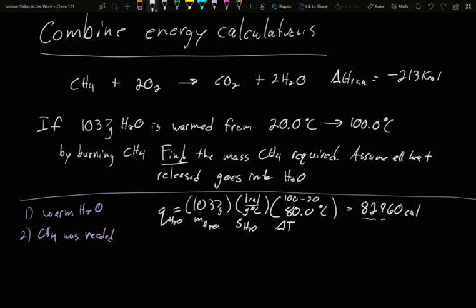Well, all that energy came from the methane burning. All that heat was released when the reaction occurred. So that amount of energy must be the energy that we produced burning the methane, since we assumed all of the energy released by the methane burning with oxygen went into the water. Which means if we think about our reaction, we have that much energy. 82,960 calories is 82.96 kcal. Since it went into the water, that much must have been released by the methane.